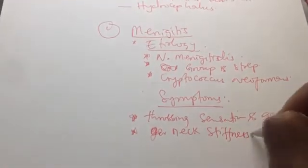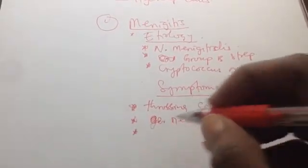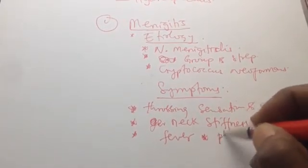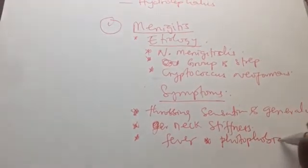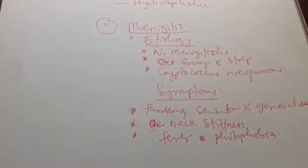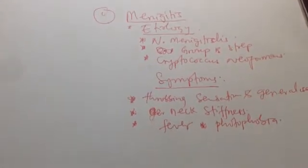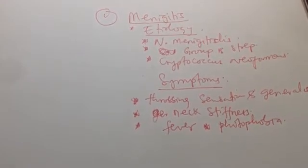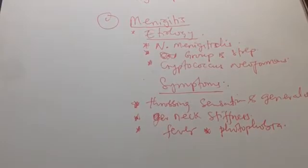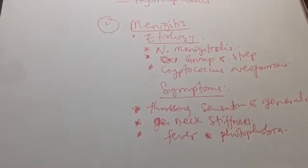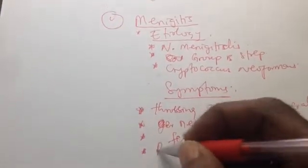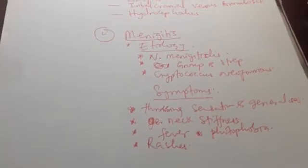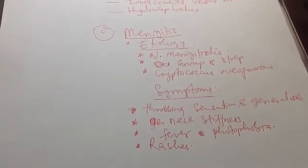In meningitis, the intracranial pressure increases due to basal inflammation and increased infiltration of inflammatory cytokines, causing fluid effusion that accumulates in the cranium. The symptoms include neck stiffness due to irritation of the meninges, fever, photophobia — patients do not like light — and rashes, depending on the bacteria or infectious agent causing the meningitis.